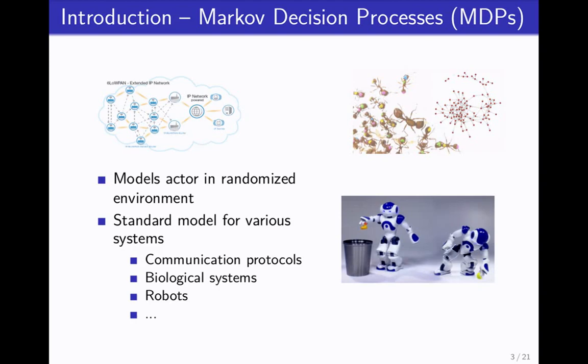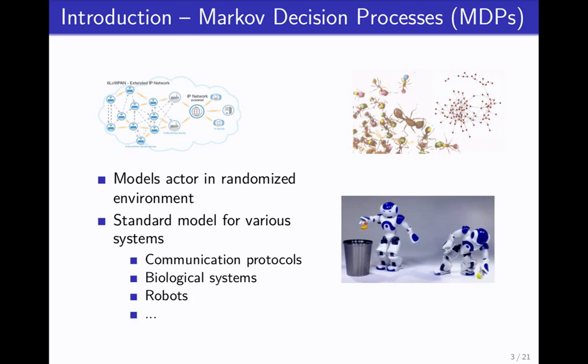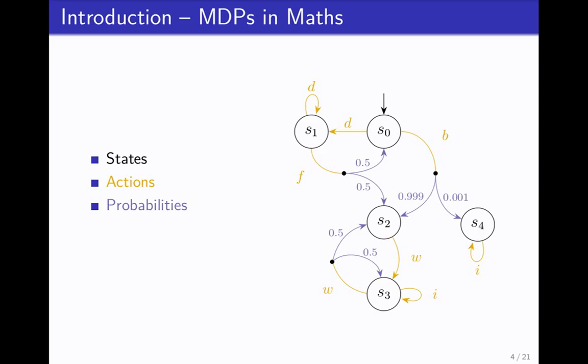First introduction, MDPs, probably most of you know them. Standard model for actors in randomized environments. How do they look like in math? I hope everyone can see this. They have states. In the states you can choose an action and then with some probability they take you somewhere. On the right side you see the toy example that will accompany us through the talk. It's quite literally a toy example because it's the accurate model of the Danzotron 3000 made by Tom Industries.